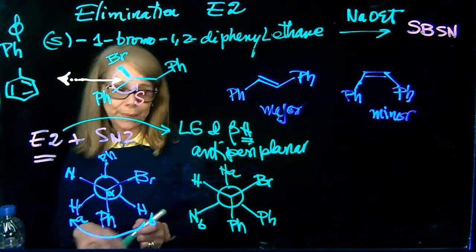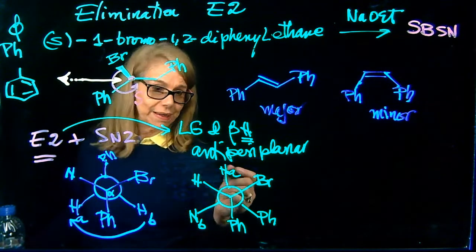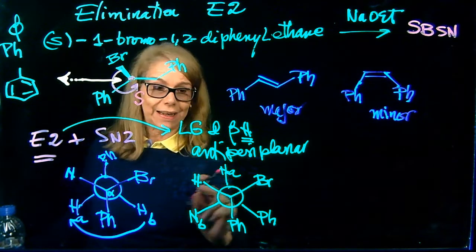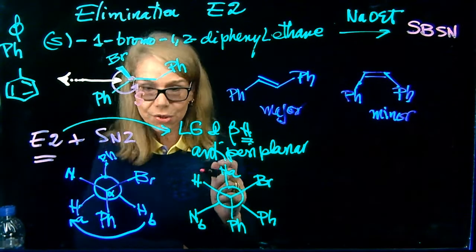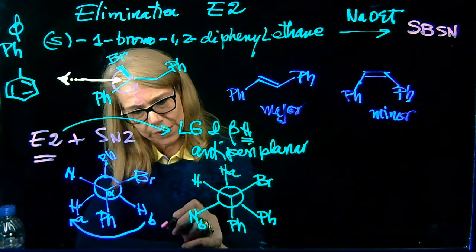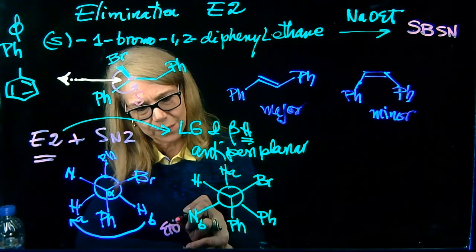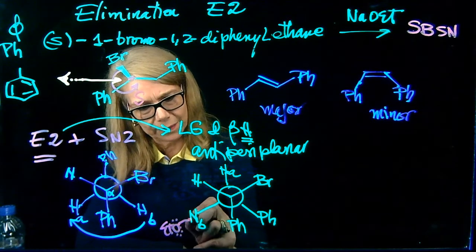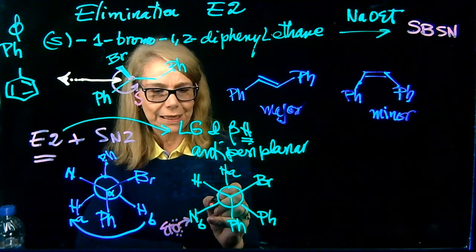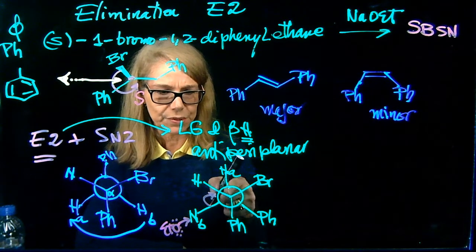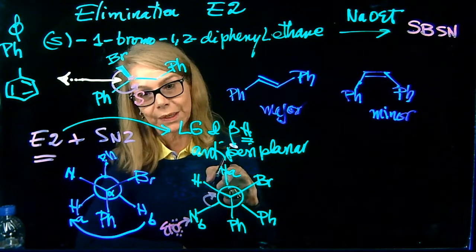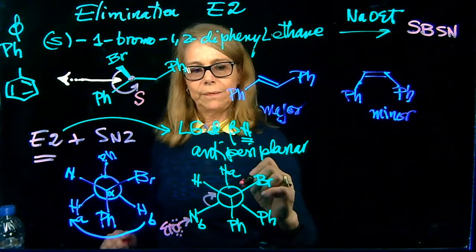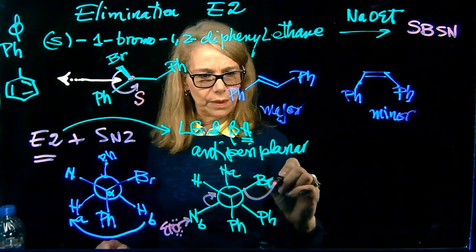Next step, we have the base. It will be abstracting the hydrogen that is anti-periplanar to the leaving group. So ethoxide is going to come here and get this product. Electrons here are going to make a double bond between the alpha carbon and the beta carbon in the back. And then this,